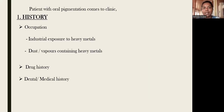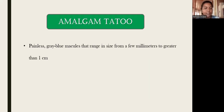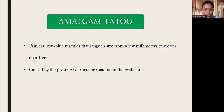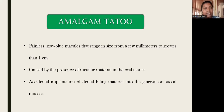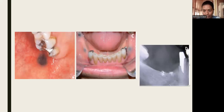If the patient has a dental history, the first entity to consider is amalgam tattoo. Amalgam tattoo is seen as a painless gray-blue macule ranging in size from a few millimeters to greater than one centimeter in the oral mucosa, alveolar ridge, or buccal mucosa. It is caused by the presence of metallic material in the oral tissues when amalgam spills over adjacent mucosa during restoration. On IOPA radiograph, radio-dense material can be seen at the site of pigmentation.